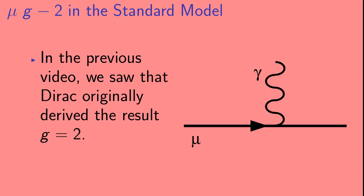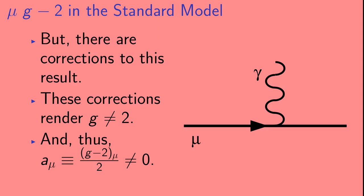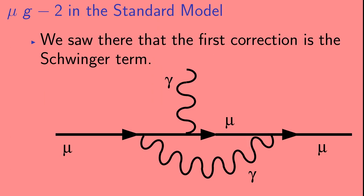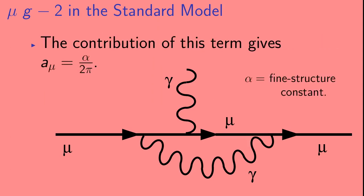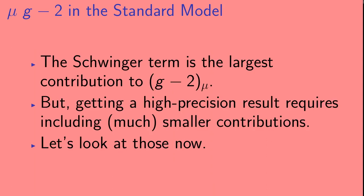In the previous video, we saw that Dirac originally derived the result G equals 2. But there are corrections to this result — these corrections render G equal to something other than 2, meaning that the anomalous magnetic moment, A_mu, defined as (G minus 2) of the muon over 2, is not equal to 0. The first correction is the Schwinger term, whose contribution gives A_mu equals alpha over 2 pi, where alpha is the fine structure constant. The Schwinger term is the largest contribution to muon G minus 2, but getting a high precision result requires including smaller — and sometimes much, much smaller — contributions.